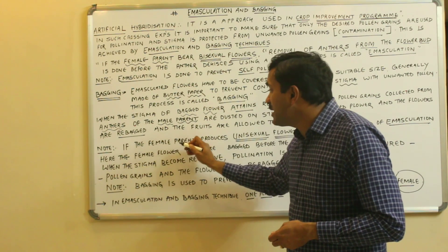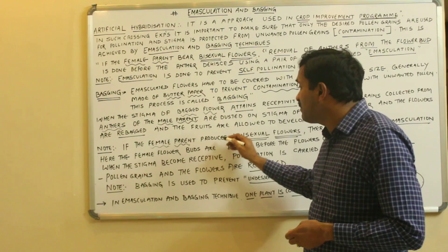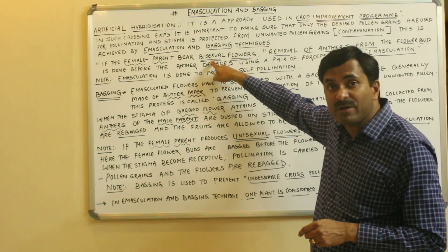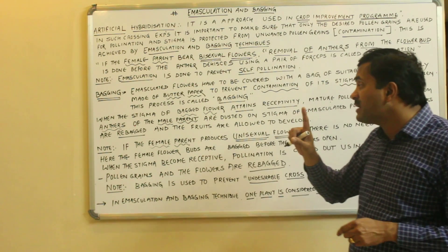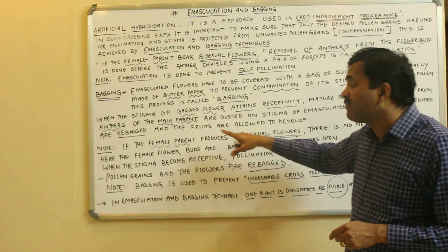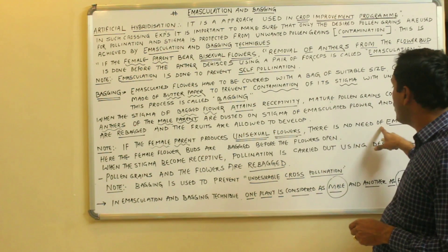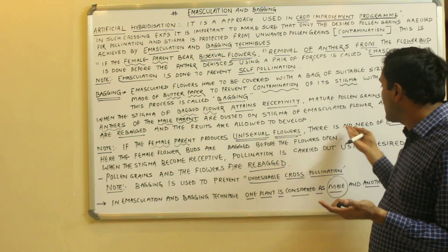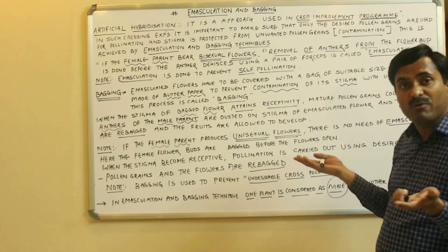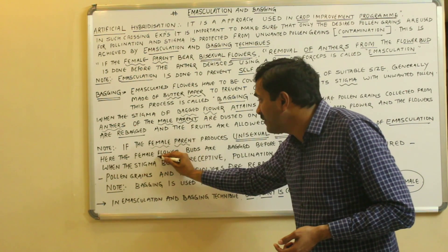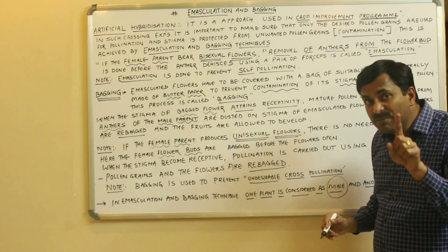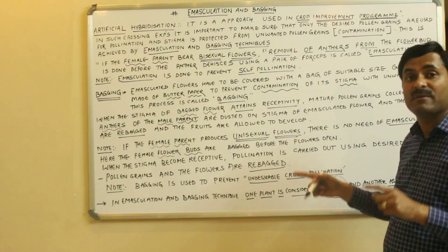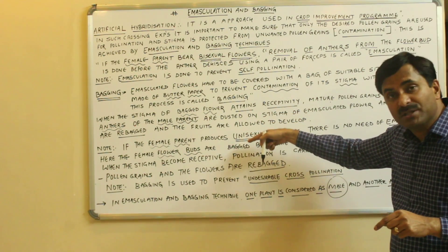This is very important: if the female parent produces unisexual flowers, emasculation is not done. There is no need to remove anthers because the female plant already has unisexual flowers. In this case, the female flower buds are simply bagged before the flowers open — no emasculation is performed.